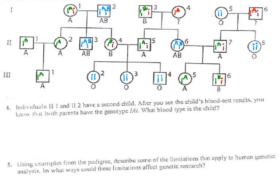This is a continuation of the previous work we did with this pedigree about ABO blood types. That one ran a little long so we'll break it into chunks. I've kept all the information we have about genotypes in this family. We were able to find most but not all of the genotypes — there are a few blanks that we'll just have to live with for now.